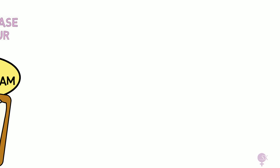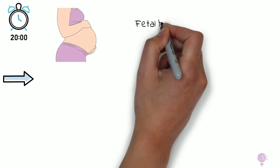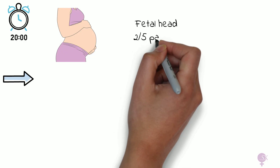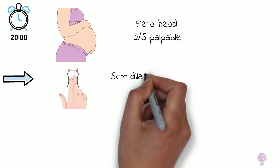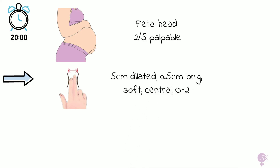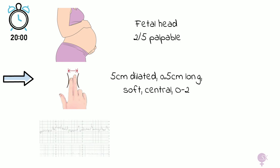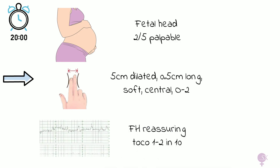Four hours have passed and we're due for another review. The fetal head is now 2 fifths palpable. The cervix is 5 cm dilated, 0.5 cm long, soft, central, with a station of minus 2. The CTG is reassuring, but contractions have decreased to 1 to 2 in 10 minutes.